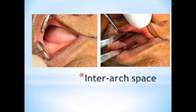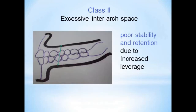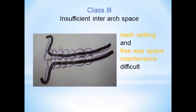The interarch space is the distance between the maxillary and mandibular ridge — the space where you place your dentures. It is usually measured when the patient maintains the rest position: you part the lips and check for the space, measured at the premolar region. Class 1 is ideal interarch space to accommodate artificial teeth, ideally 15 to 20 millimeters. Class 2 is excessive interarch space, with poor stability and retention due to increased leverage forces. Class 3 is insufficient interarch space, making teeth setting and freeway space maintenance difficult.